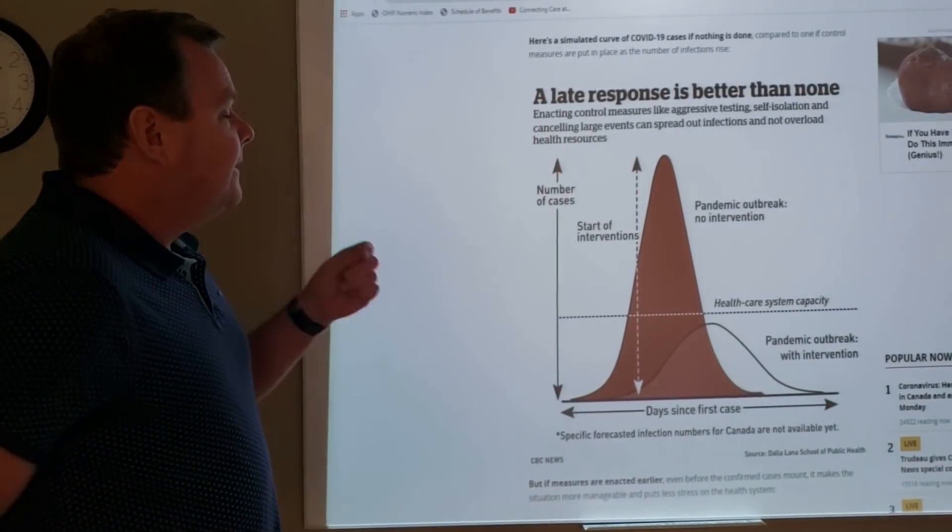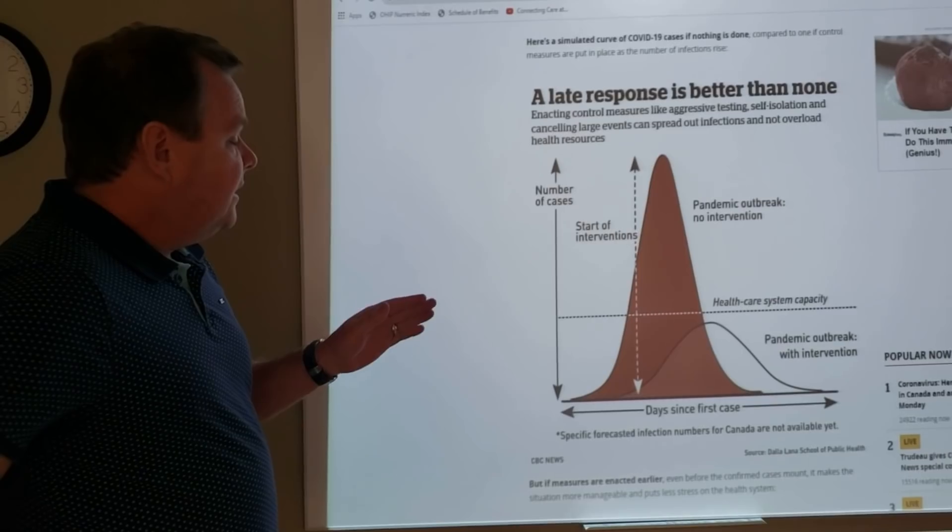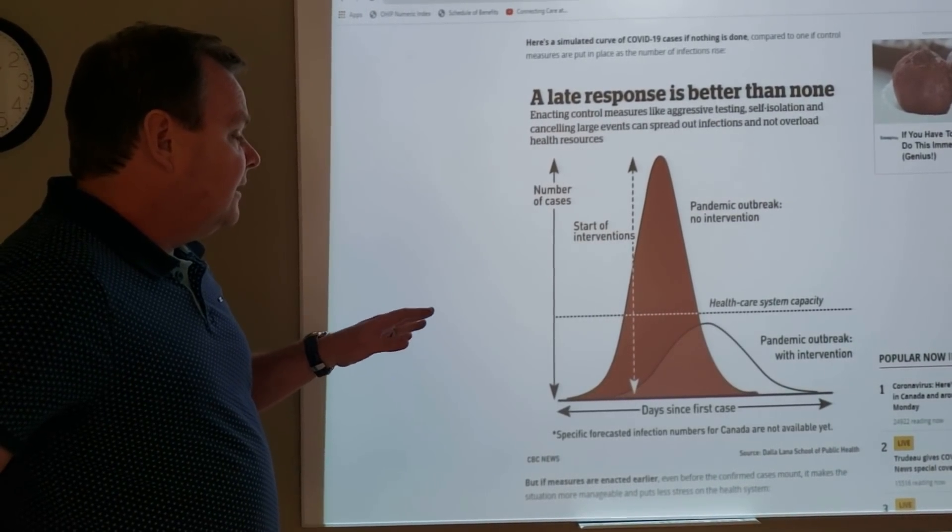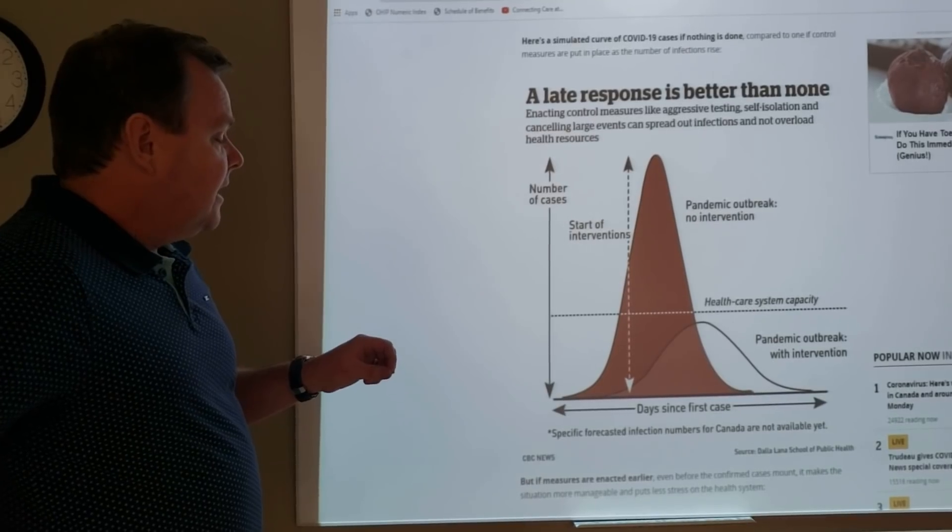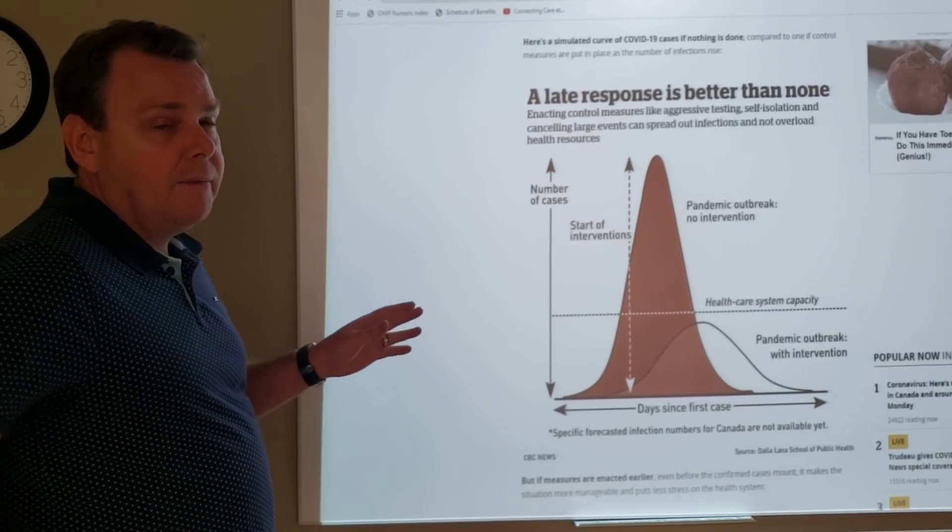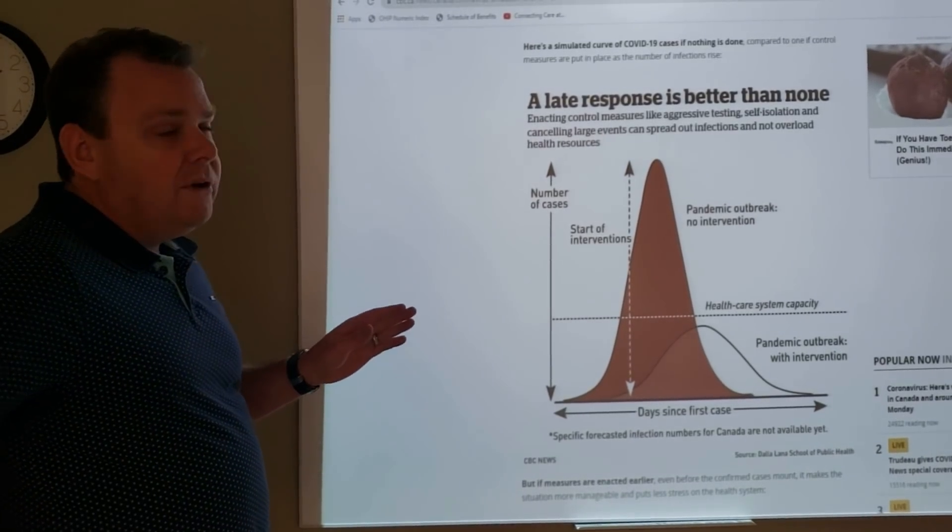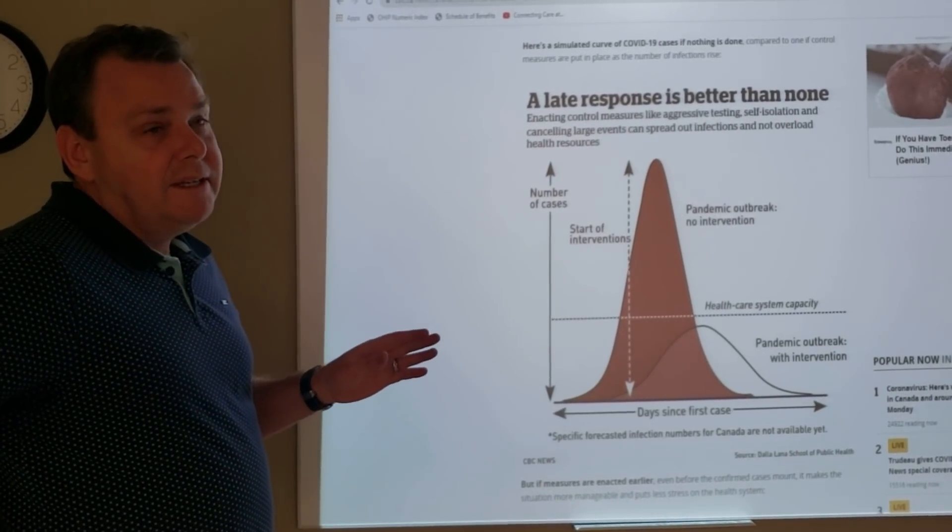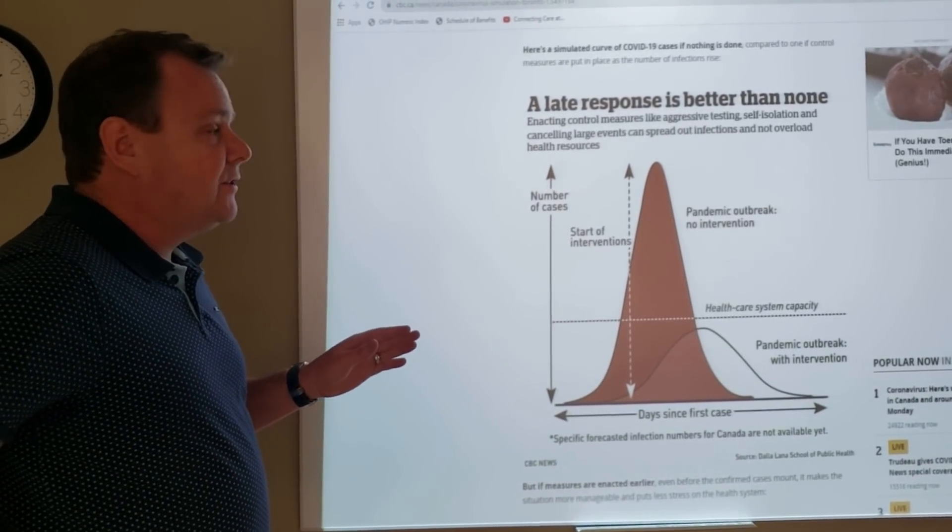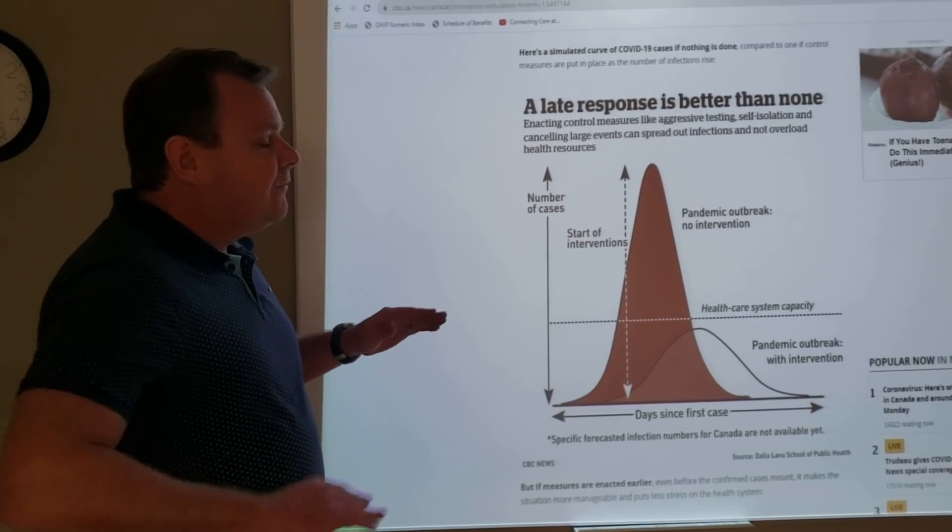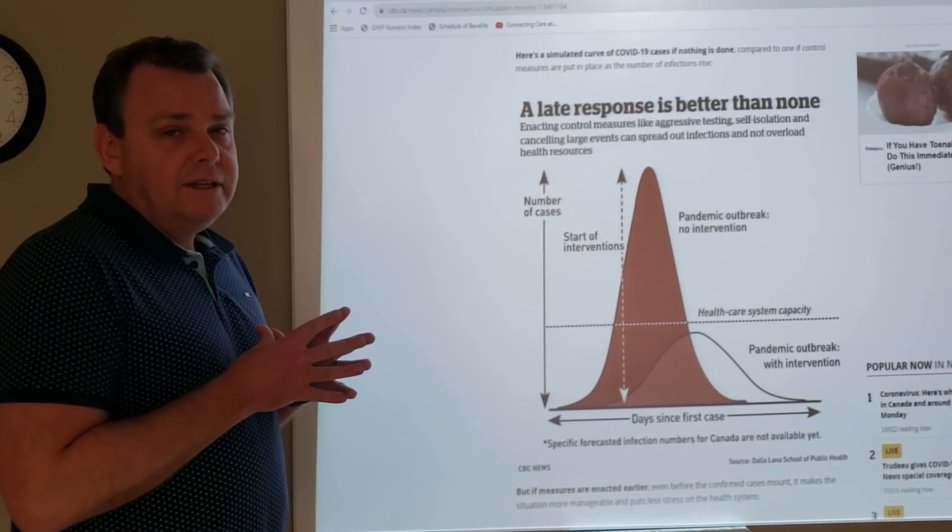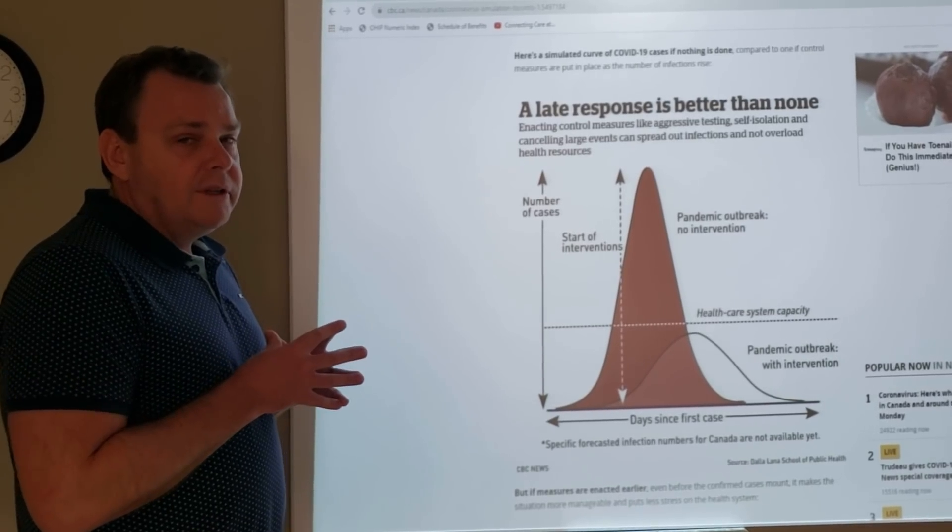As we move to this next slide, this slide is from the Dalai Lama School of Public Health. It was reported on CBC News, but you've probably seen some facsimile of this over the past couple of days. What we're going to try to do is explain this in fairly basic, in some ways brutal terms, to understand the strategy that's going on. This curve is really talking about flattening the curve. You've heard that terminology probably on TV, but we're going to try to help you understand what this means.